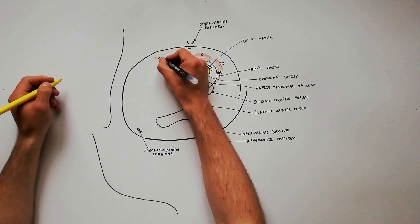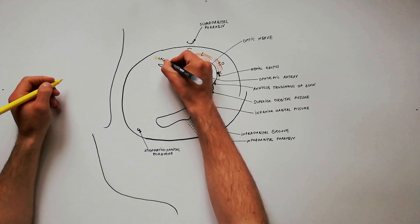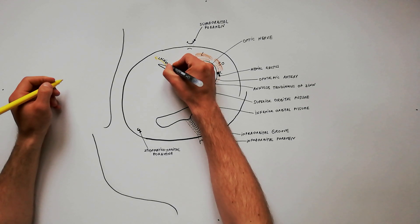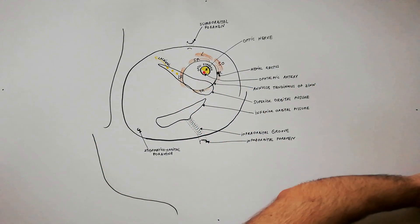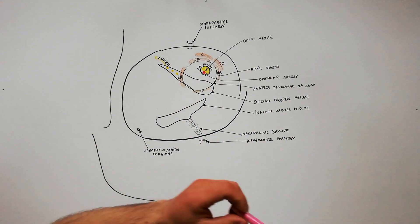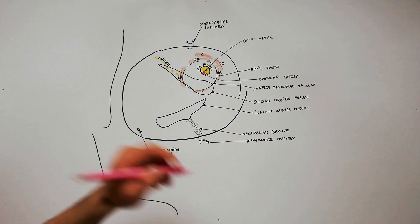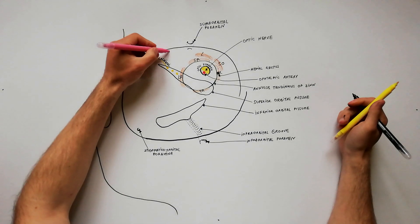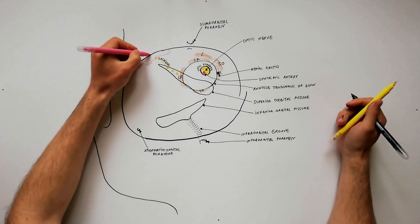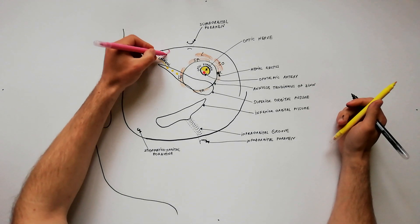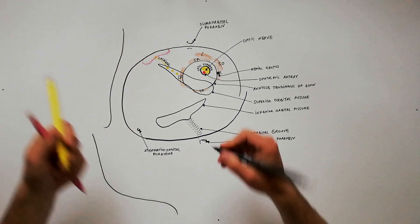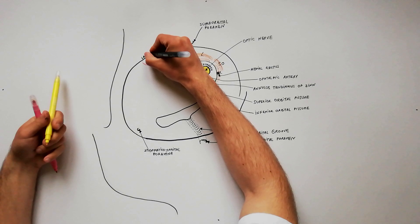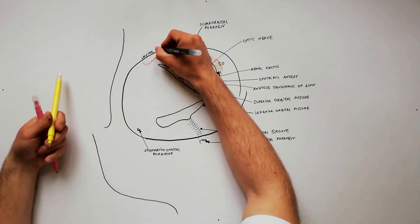The lacrimal nerve is a sensory nerve, being the smallest branch of the ophthalmic division of the trigeminal nerve. It provides sensory innervation for the lacrimal gland, the conjunctiva, and the lateral upper eyelid.